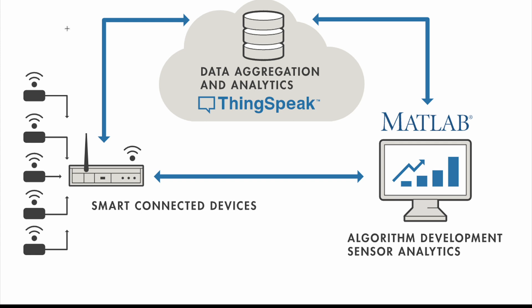From a research approach, ThinkSpeak provides an infrastructure chart showing what's going on. First, you have your smart connected devices, which can be an Arduino, ESP, Raspberry Pi, or whatever you want as long as you have an internet connection. You have your devices and sensors, which may be connected directly or via a base unit. From there, you can send this data to the ThinkSpeak cloud.